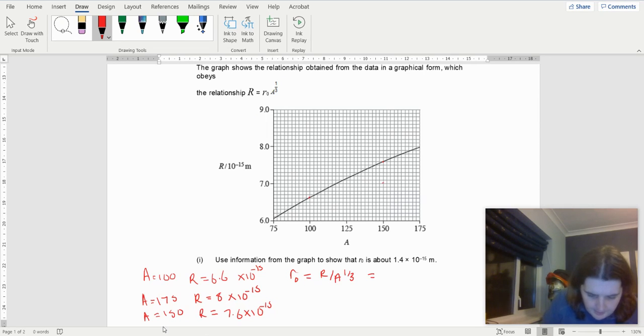So I'm going to do that for each of those here. So 6.6 × 10⁻¹⁵ divided by 100 to the power of 1 over 3. I get an answer of 1.42 × 10⁻¹⁵ there.